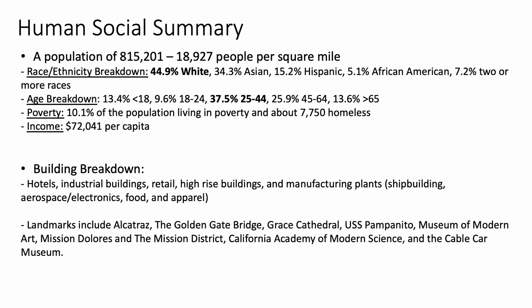Here is the human social summary. The population is a little over 800,000 — about 44.9% white and 34.3% Asian. The biggest age group is 25 to 34, at about 37.5% of the population. The building breakdown includes hotels, industrial buildings, retail, high-rise buildings, and manufacturing plants producing ships, aerospace products, electronics, food, and apparel. Landmarks include the Golden Gate Bridge, Alcatraz, USS Pampanito, the Mission District, and the California Academy of Sciences, among others.